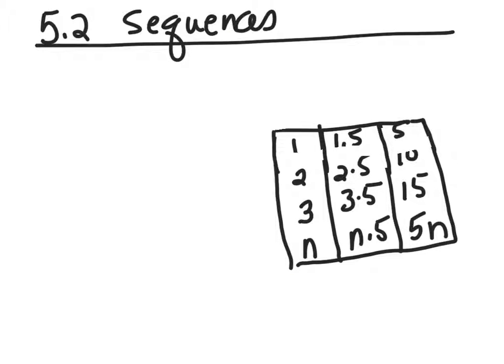All right, and number three in lesson two in chapter five is on sequences, and of course it's getting a little bit harder. We're going to be using a table and a word problem, so let's pull out the math.